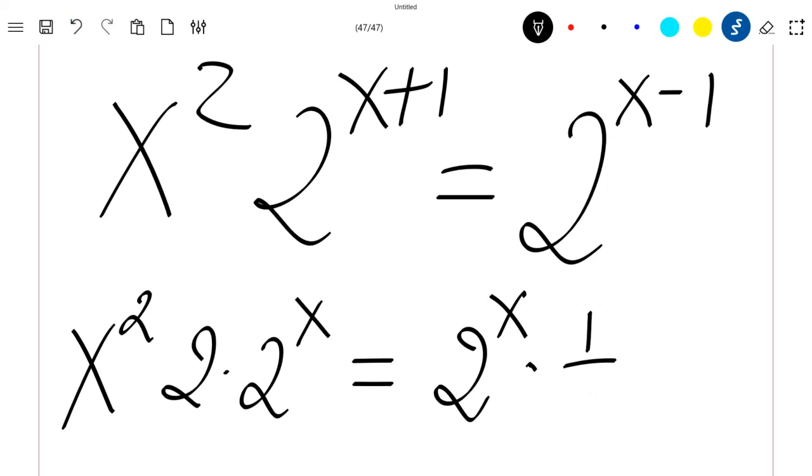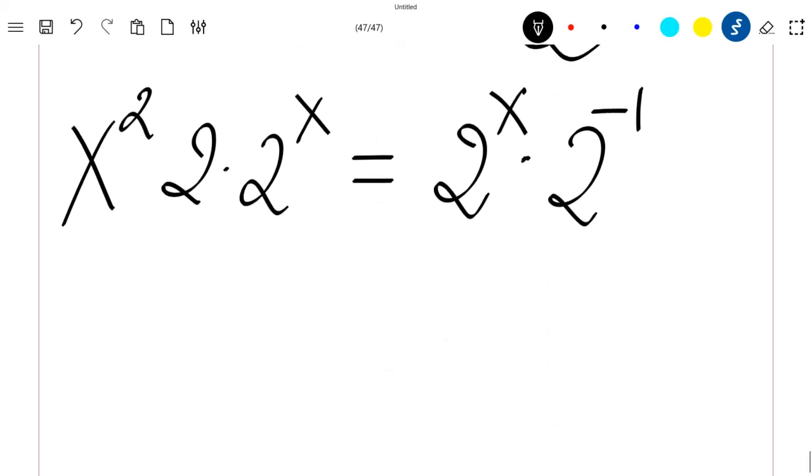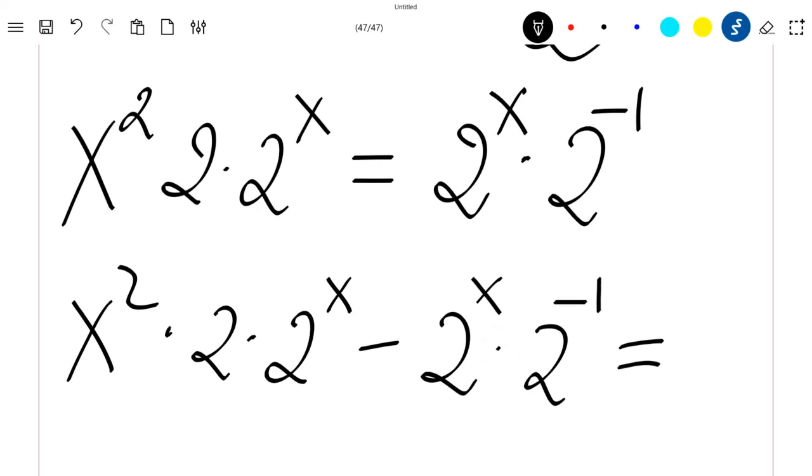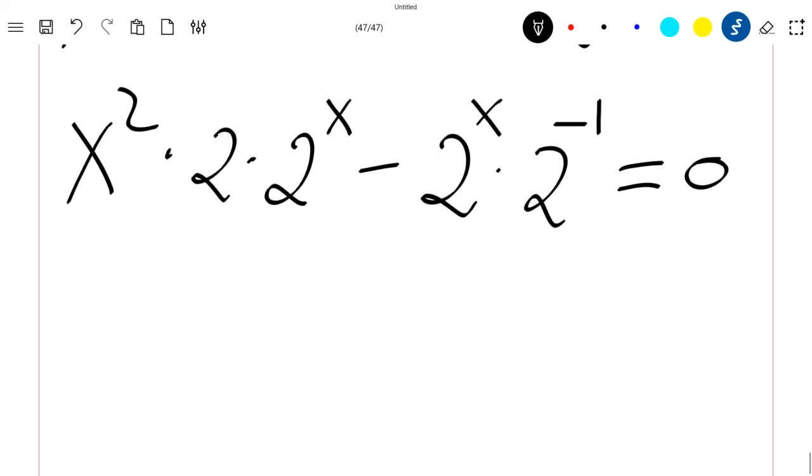Let me first rewrite this as times 2 power minus 1. So what is this? This is again x square times 2 times 2 power x minus 2 power x times 2 power minus 1 equal to 0.